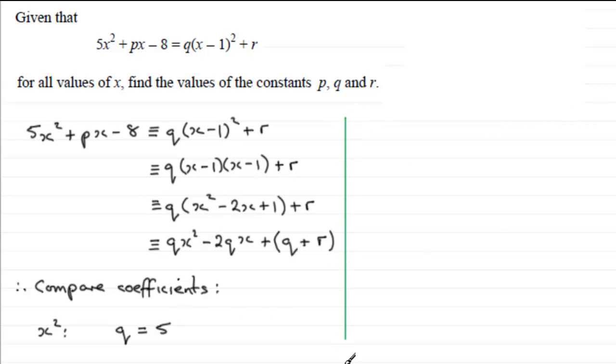Now if we look at the next term, our x term, we're going to compare the coefficients, so that's the value in front of the x. So here we've got +p or just simply p, and this must be equal to -2q. But we already know that q equals 5, so just say but q equals 5, so therefore p must be equal to -2 times 5, in other words -10.